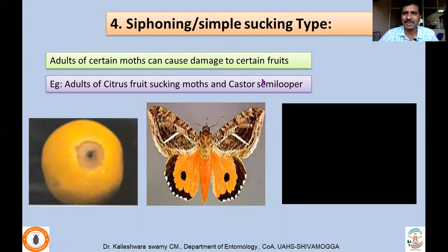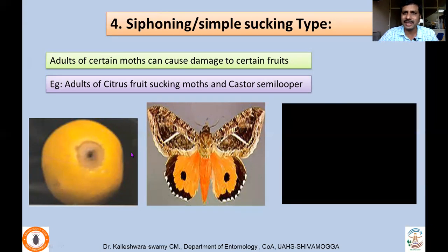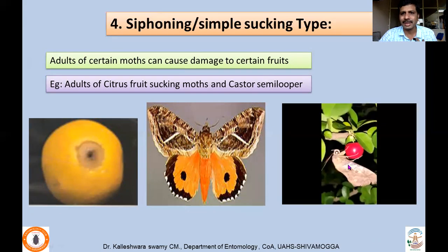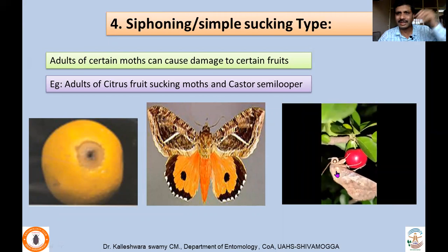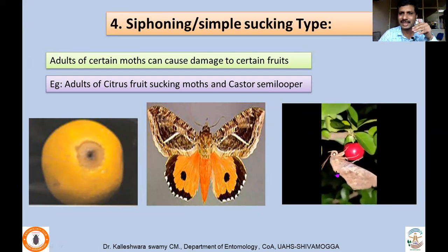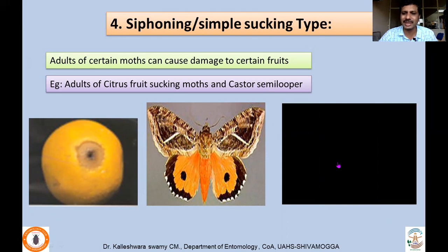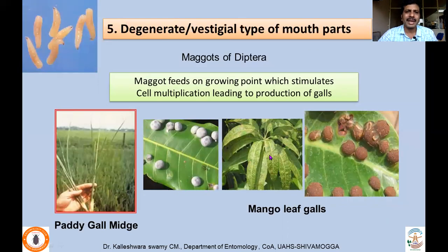Regarding siphoning or simple sucking type mouthparts — most moths have a proboscis that is not hard. However, in some moths the proboscis is hard enough to be inserted into fruits, and they suck the juice, thereby acting as fruit-sucking moths. You can see here the insect inserting its proboscis and sucking juice from the fruit.